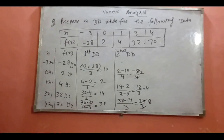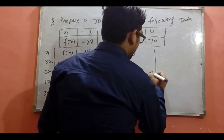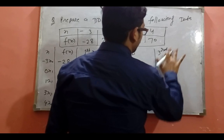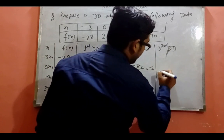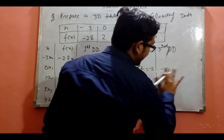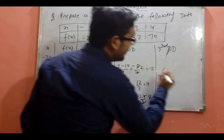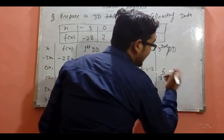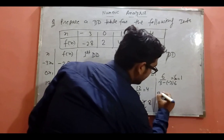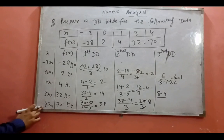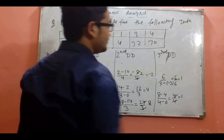Now calculate the third divided differences. (4 minus 2) over (3 minus (-3)): 6 over 6 = 1. Next, (8 minus 4) over (4 minus 0): 4 over 4 = 1.